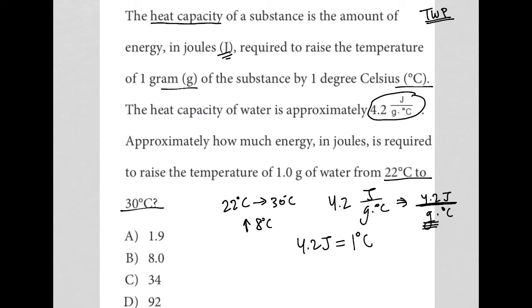So all I'm going to do is multiply 4.2 times 8, because it takes 4.2 joules to go from 22 to 23, another 4.2 to go from 23 to 24, and so on. I need 8 degrees up, which means 4.2 joules of energy times 8. Let me use my calculator to make sure — 4.2 times 8 equals 33.6.